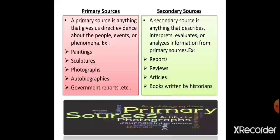Let us see the examples. Primary sources can be paintings, sculptures, photographs, autobiographies or government reports. Secondary sources are reports, reviews, articles, and books written by historians. Historians will write books based on facts — and they get those facts from the primary sources.